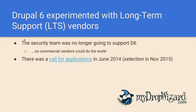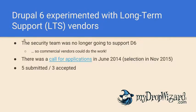The idea behind LTS vendors was that rather than having the all-volunteer security team continue supporting Drupal 6, commercial vendors could do it for those still interested. There was a call for applications to be a long-term support vendor in June 2014, and vendors were ultimately selected in November 2015. Despite lots of people being very upset, only five companies applied over that year-and-a-half period, and three were accepted: Acquia, Tag1, and My Drop Wizard.